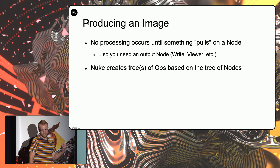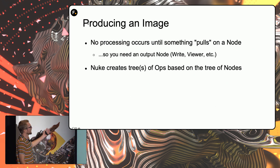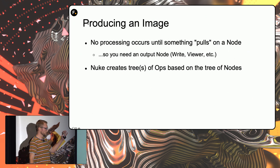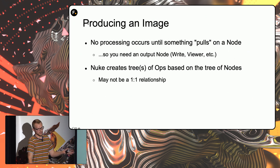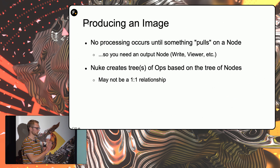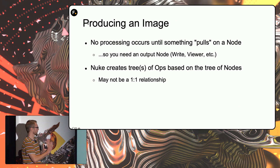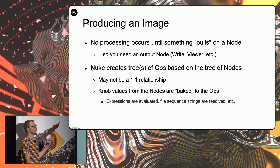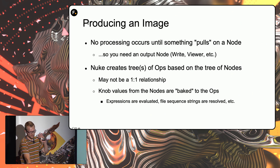Assuming you're using a basic example like a write or a viewer, when that processing step starts, Nuke creates trees of operators based on the tree of nodes. There's not necessarily a one-to-one relationship between nodes and ops, particularly in the case of an op that needs to operate on multiple frames of input data. What actually happens is that it will create two copies of the tree at different contexts, as opposed to one op that's aware of how to operate on multiple frames. When the op tree is constructed, knob values from the nodes get baked down — things like expressions get evaluated, file sequence strings get resolved, and things get converted to primitive data types.